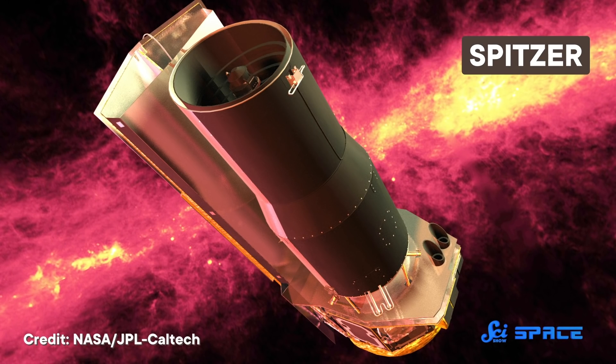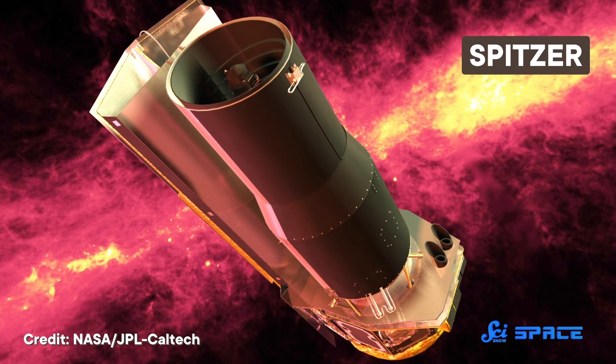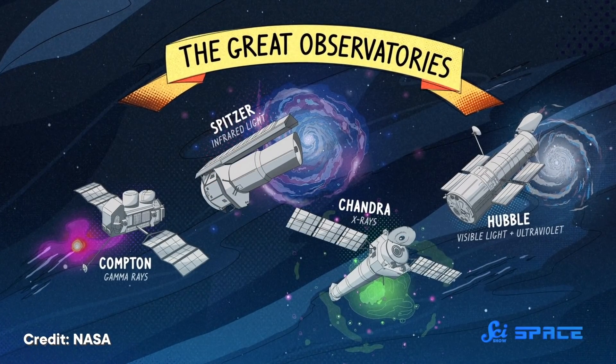But beyond observations, IRAS proved that infrared astronomy in space could be a success. The Spitzer Space Telescope began to zoom in on individual infrared objects in 2003, becoming the fourth of NASA's great observatories.